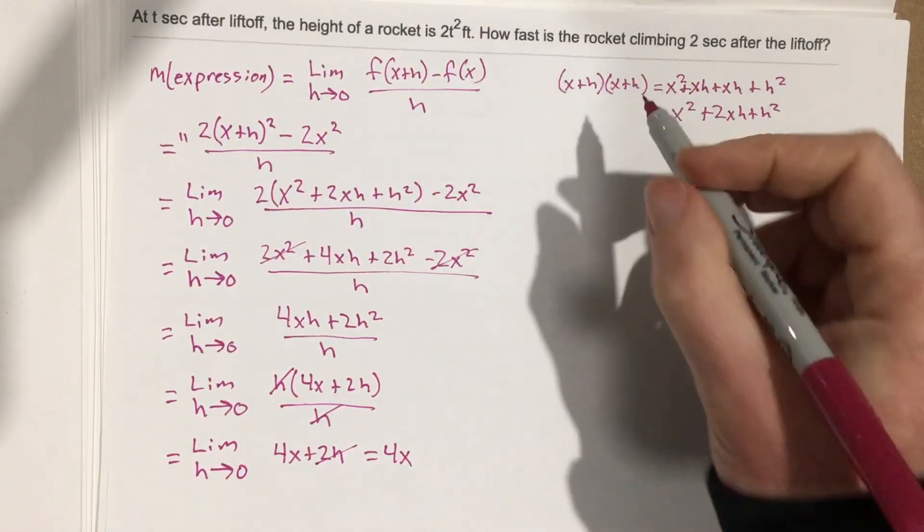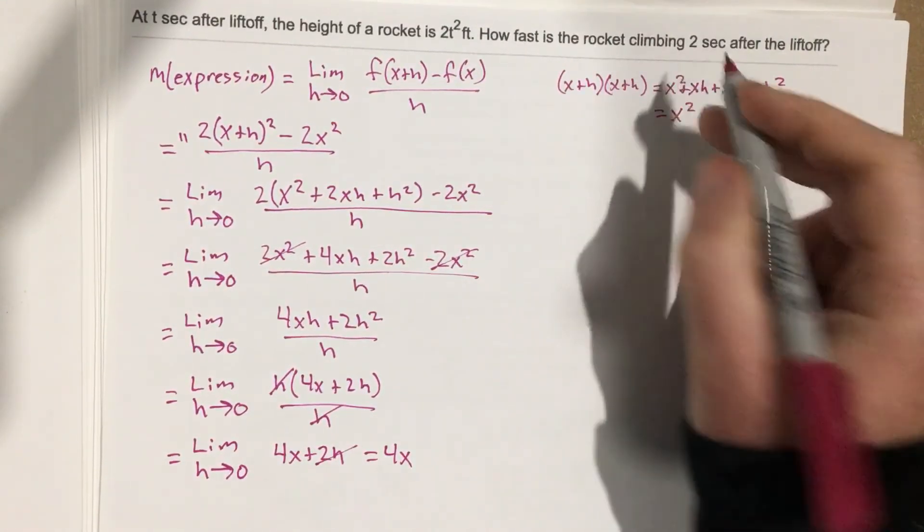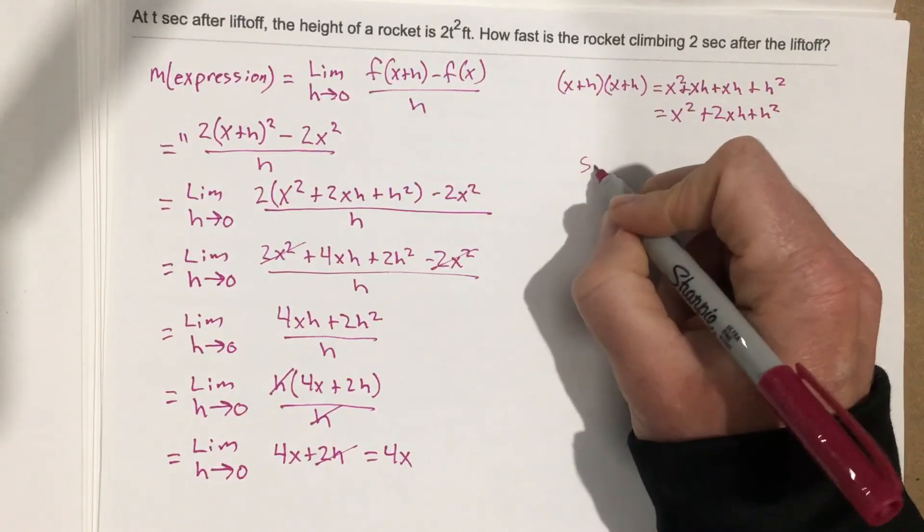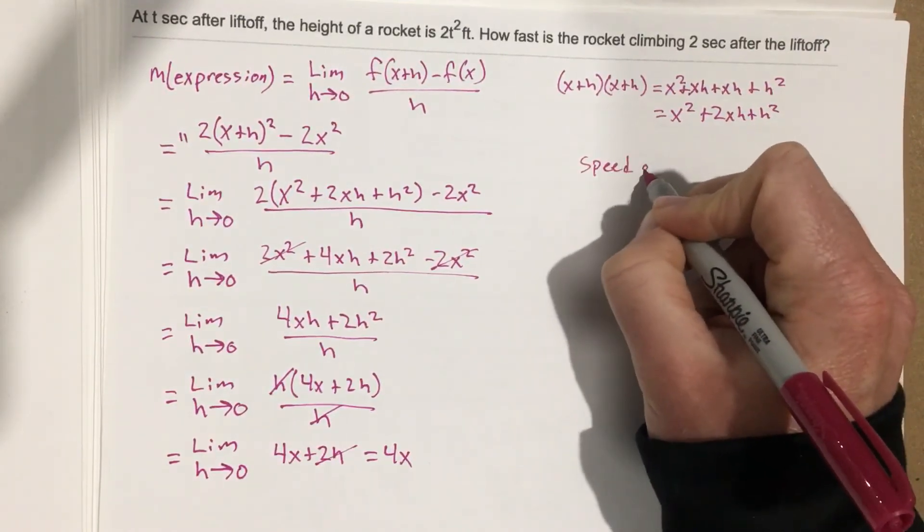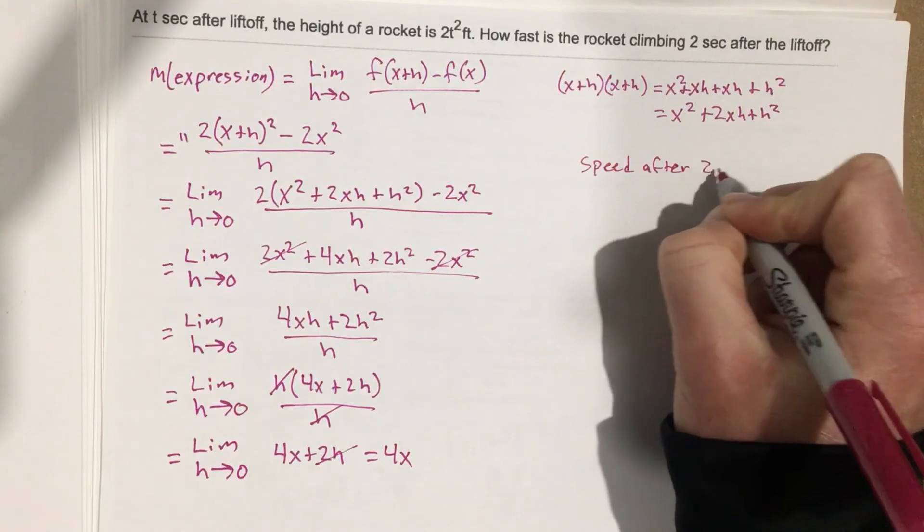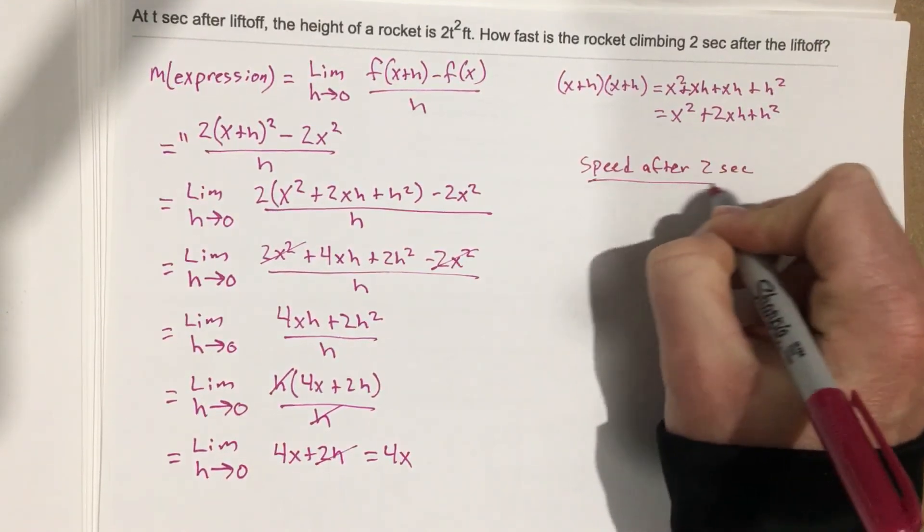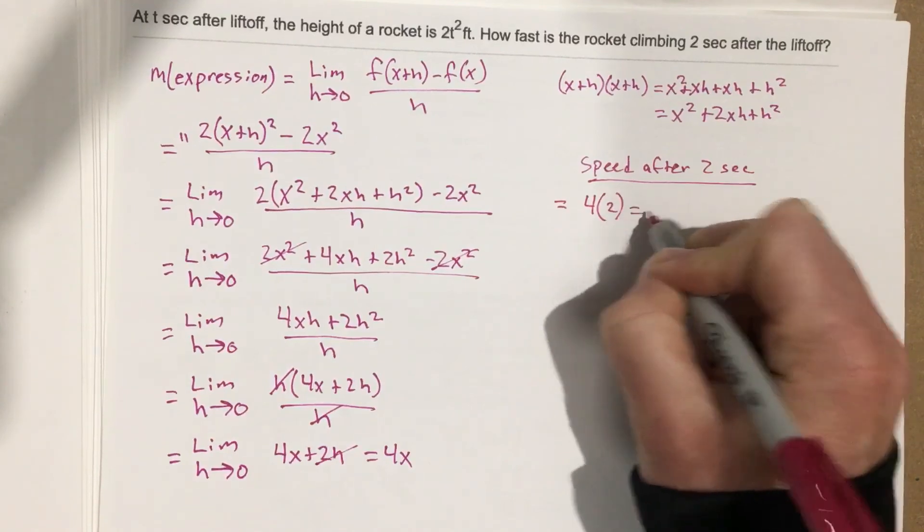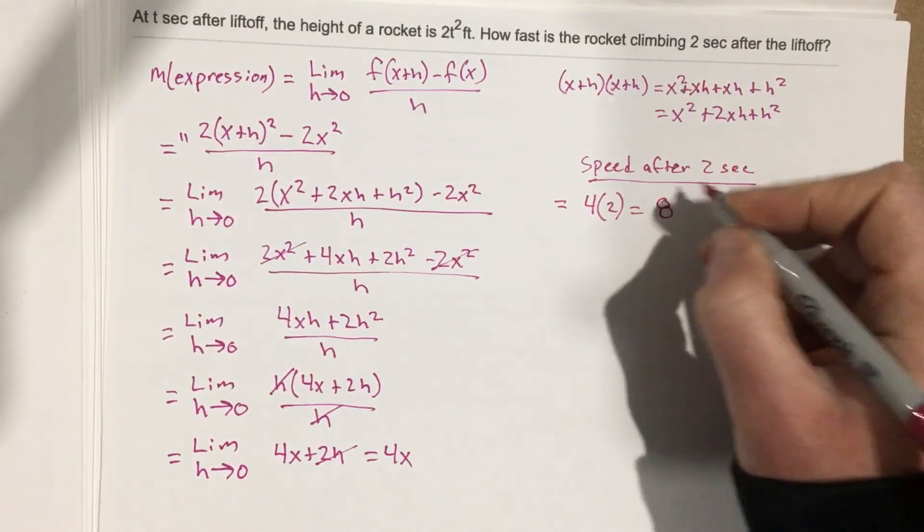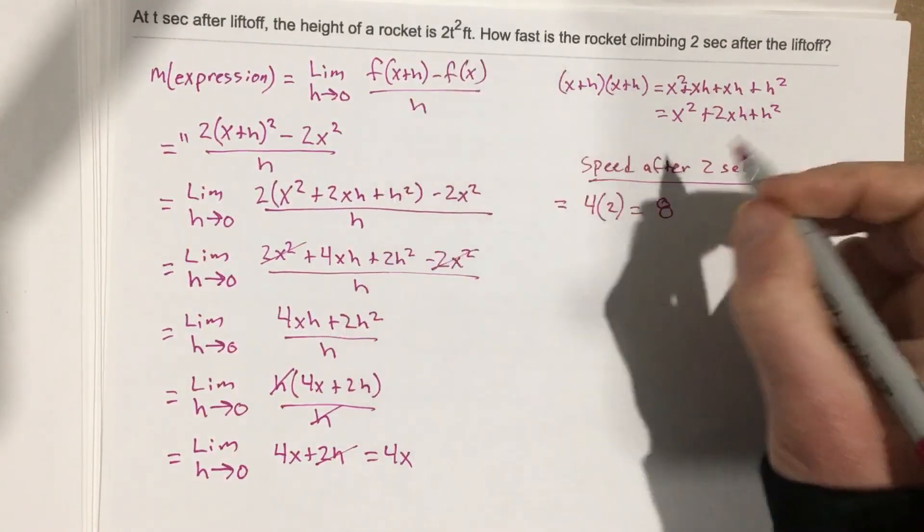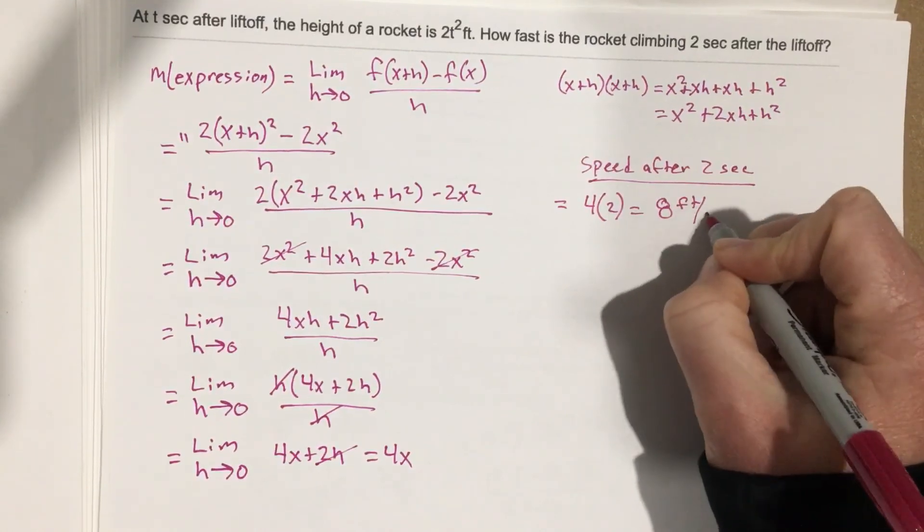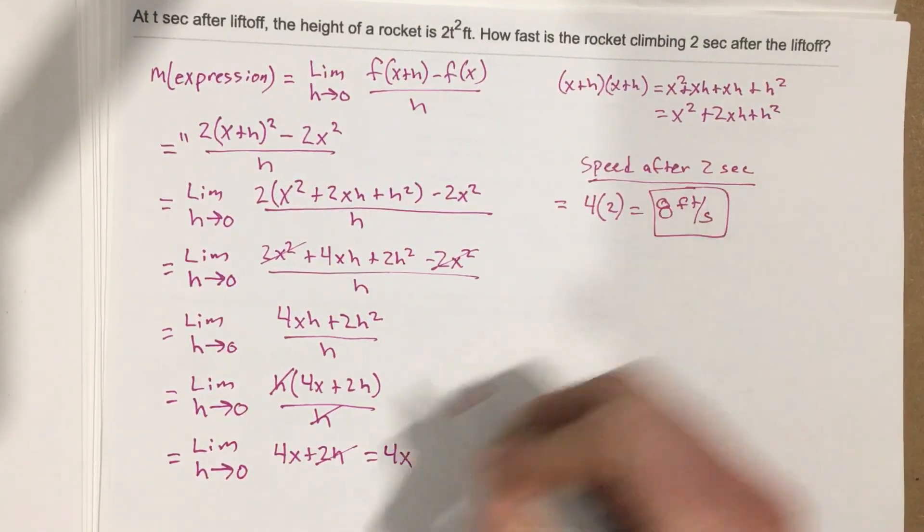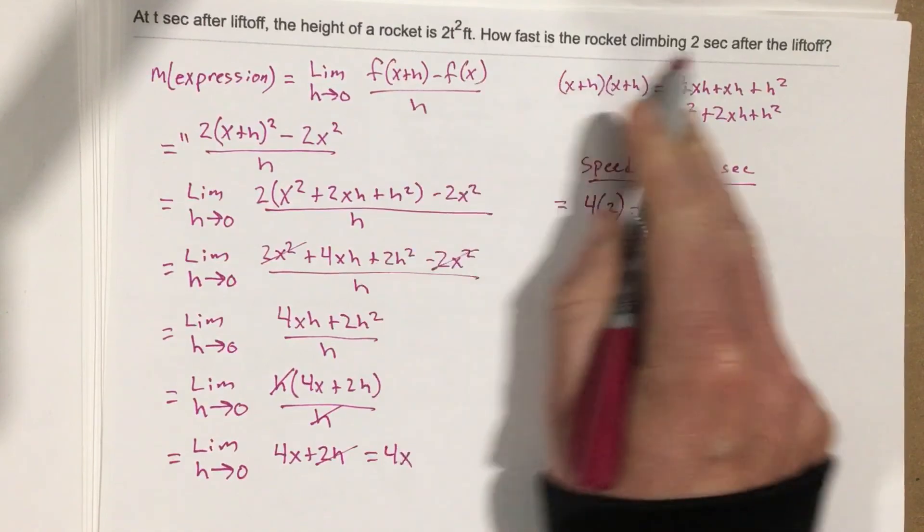We want to know how fast the rocket is climbing after 2 seconds. So speed after 2 seconds equals 4 times 2, which is 8. And that would be feet per second, because they're using feet and seconds.